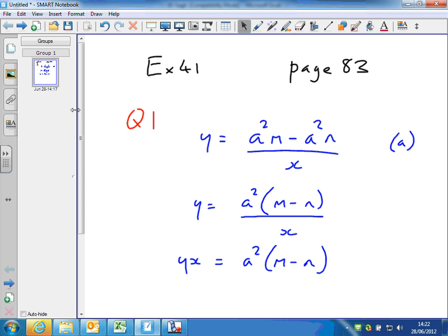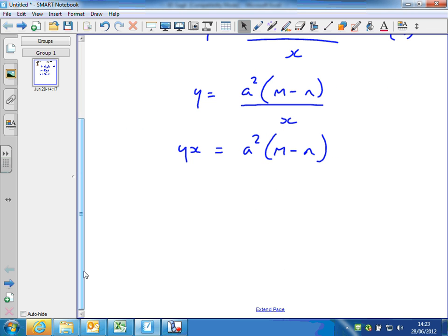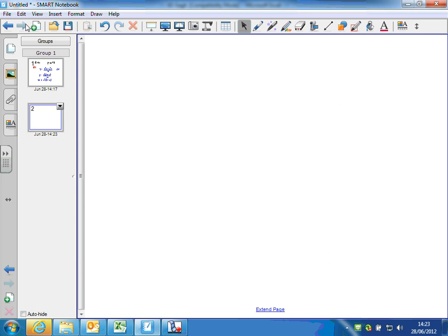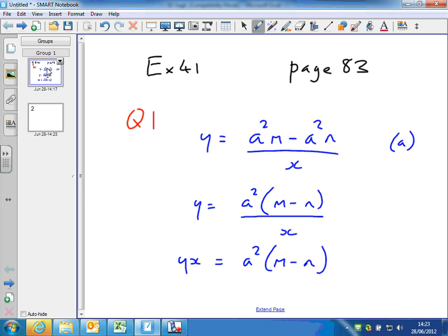There's an extension question on this one. You could try rearranging this formula for M. So take the original equation, Y equals A squared M minus A squared N over X.